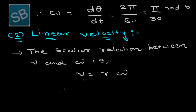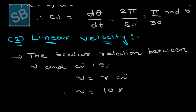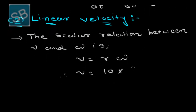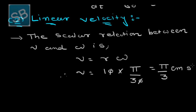v equals r times ω. The value of r is 10 and ω is π/30 radians per second. The zeros cancel, giving a final answer of π/3 centimetres per second.